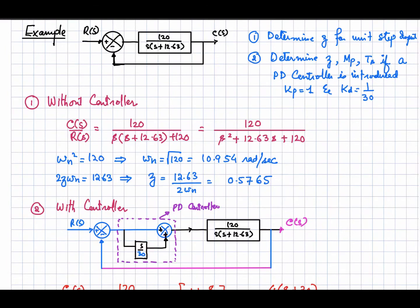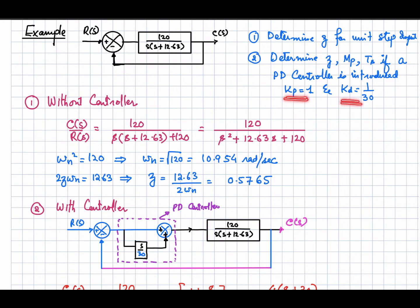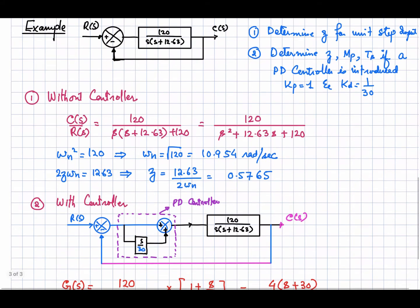Now let's look at the third example. A feedback system is given, and we want to determine zeta for a unit step input, and also determine zeta, overshoot Mp, and settling time ts if a PD controller is introduced with kp = 1 and kd = 1/30. We want to examine the transient response parameters of the resulting system.